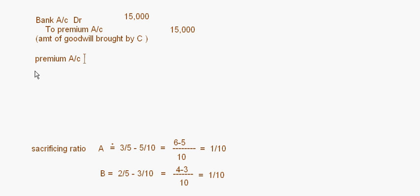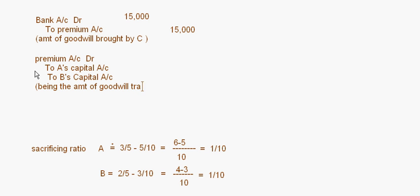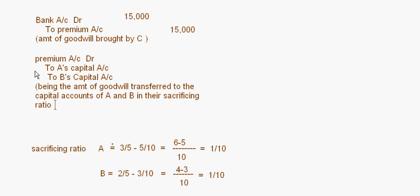Now we'll write the final entry. Premium account debit to A's capital account and to B's capital account — this is the amount of goodwill transferred to the capital accounts of partners A and B in their sacrificing ratio of 1 is to 1. The premium is 15,000, so it will be equally shared: 7,500 and 7,500.